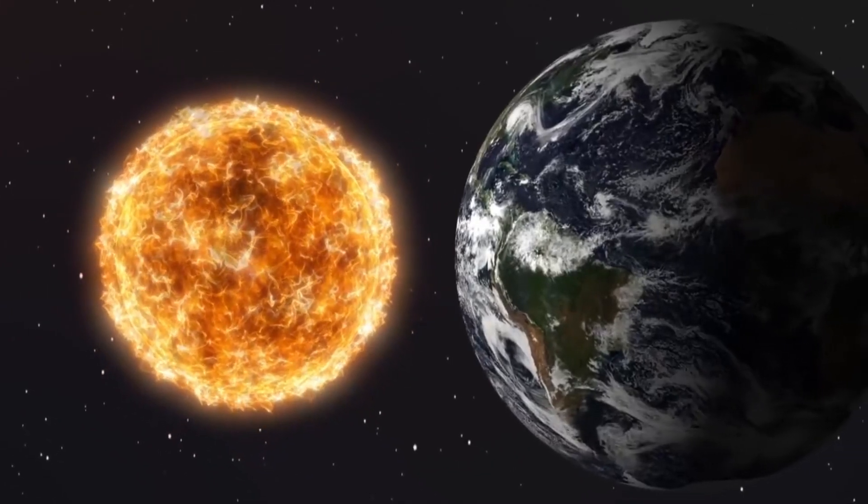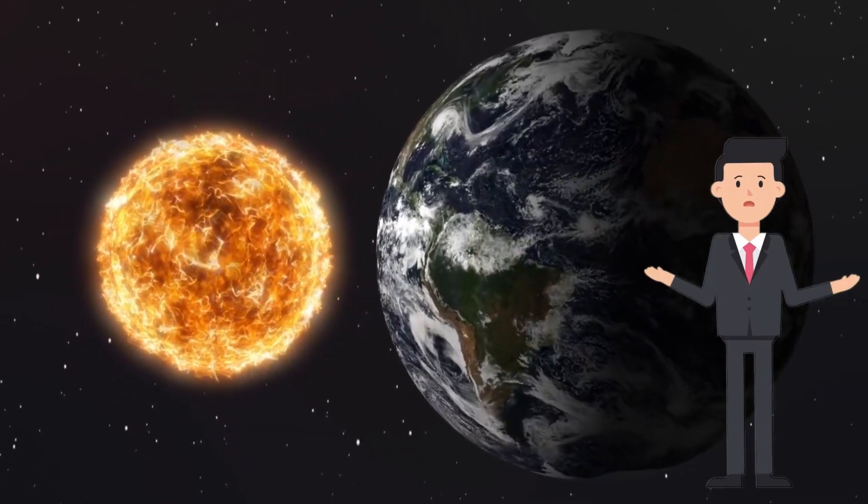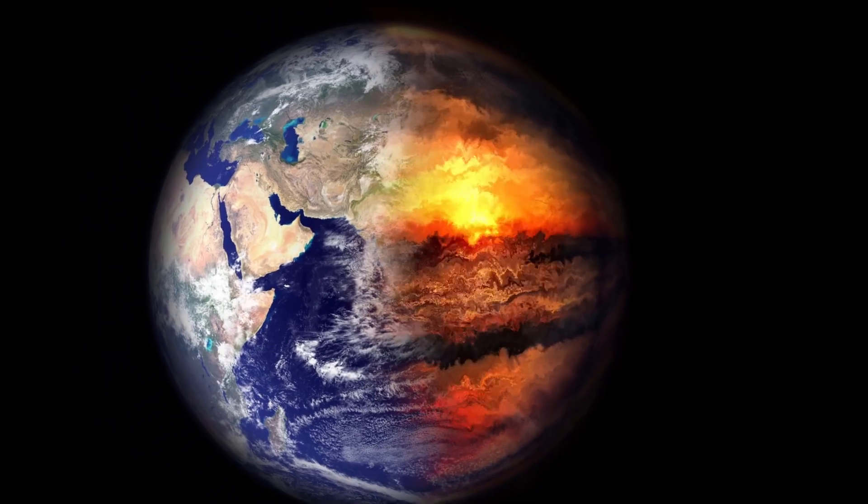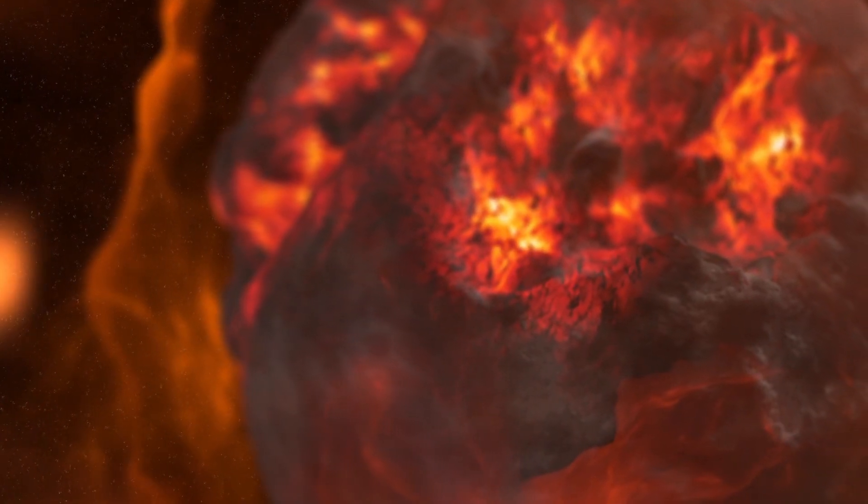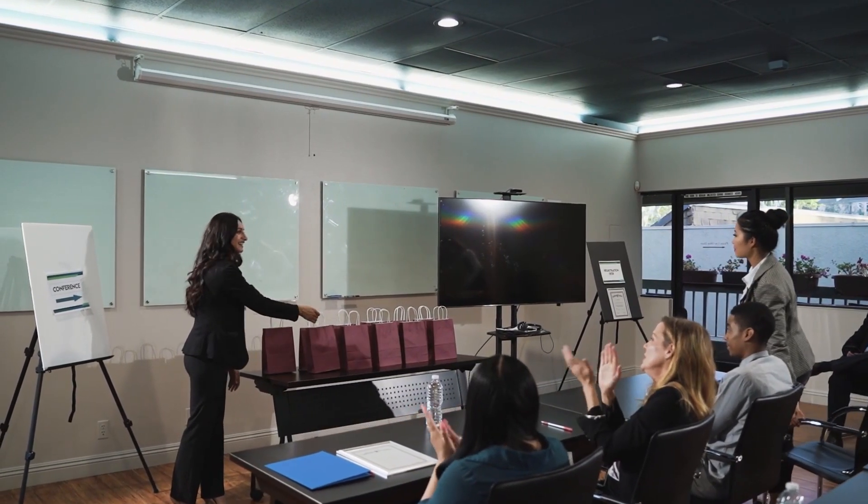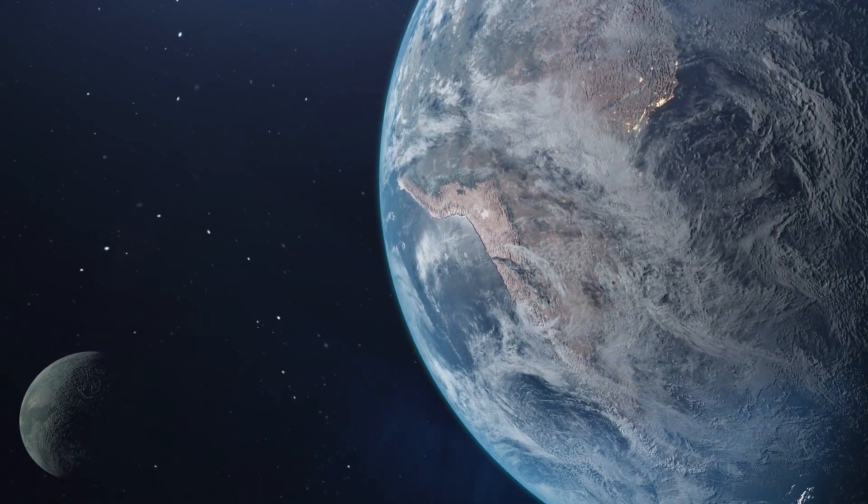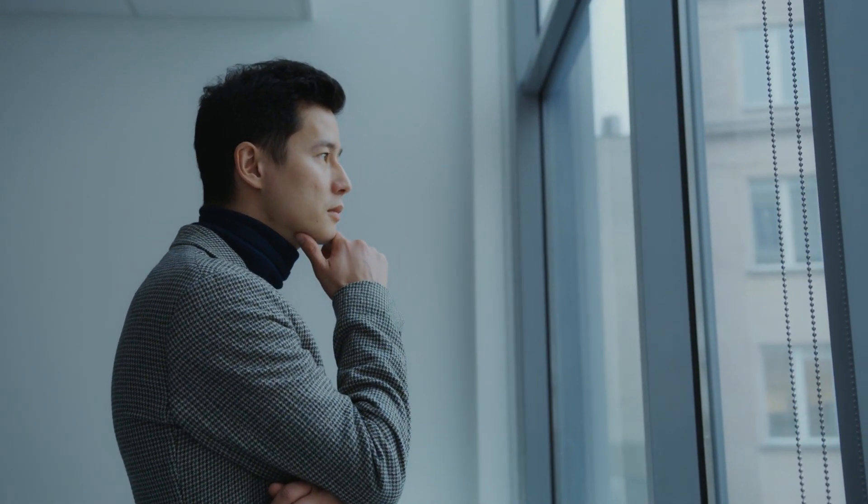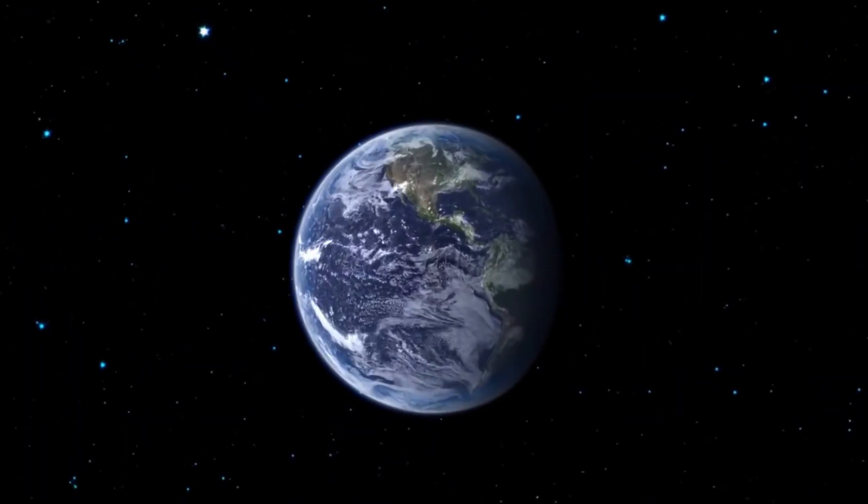The idea of Earth becoming as big as the Sun is a captivating thought experiment, but the consequences are mind-bending. From the overwhelming gravitational forces to the scorching temperatures and the transformation into a star, such an event would render our planet unrecognizable and inhospitable to life as we know it. Remember, while this scenario is a fascinating theoretical concept, it's crucial to appreciate the delicate balance that allows life to thrive on our planet. Understanding these hypothetical scenarios can help us appreciate the uniqueness of Earth and the importance of protecting it.